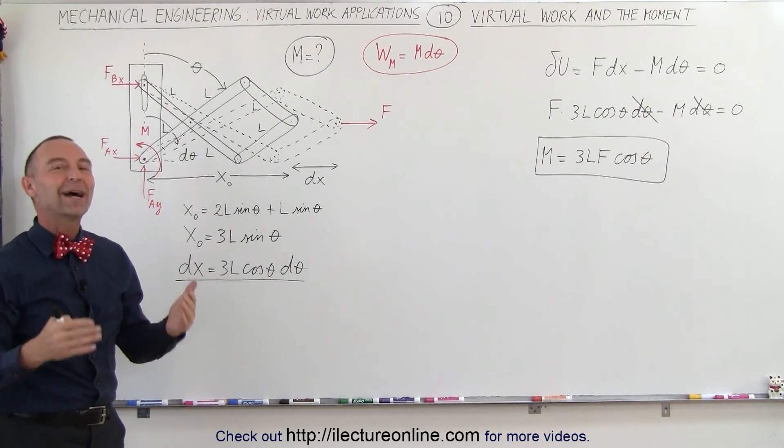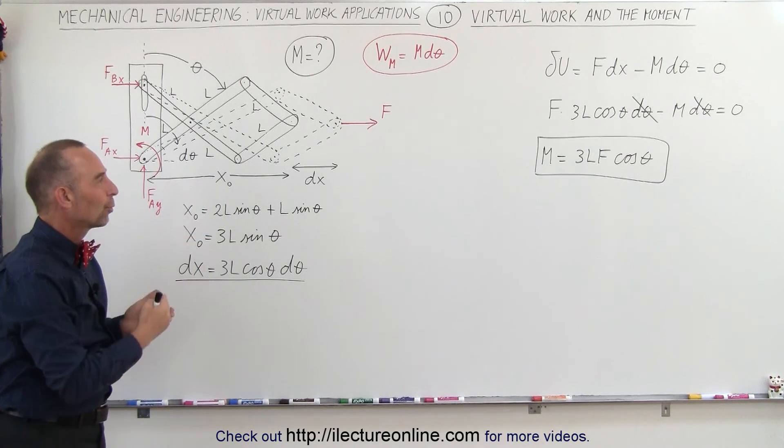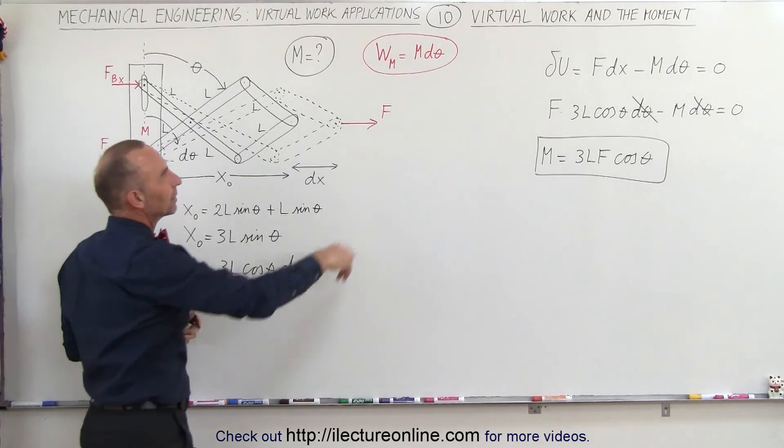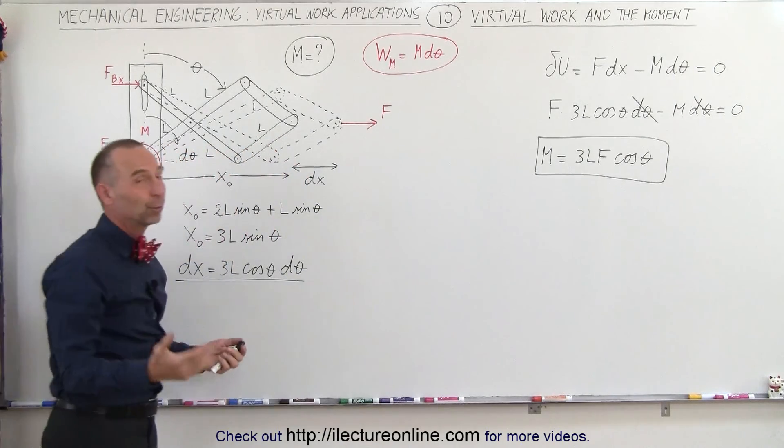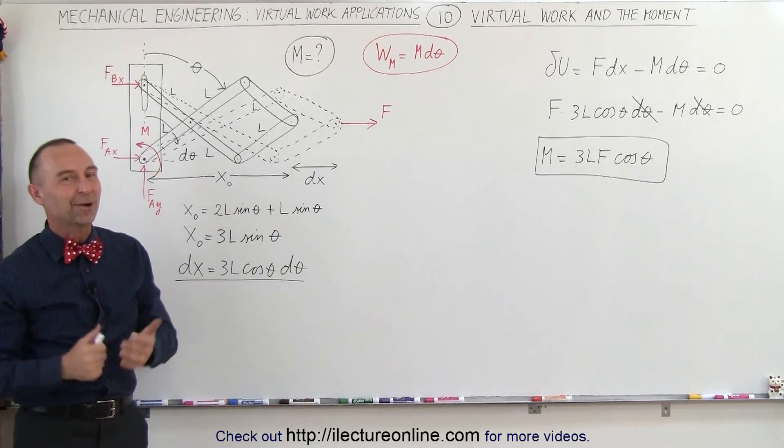And that's how we combine the concept of the moment with virtual work. You can see that the way we calculate the virtual work using the moment is simply multiplying the moment times the change in the angle which makes it quite easy. That's how it's done.